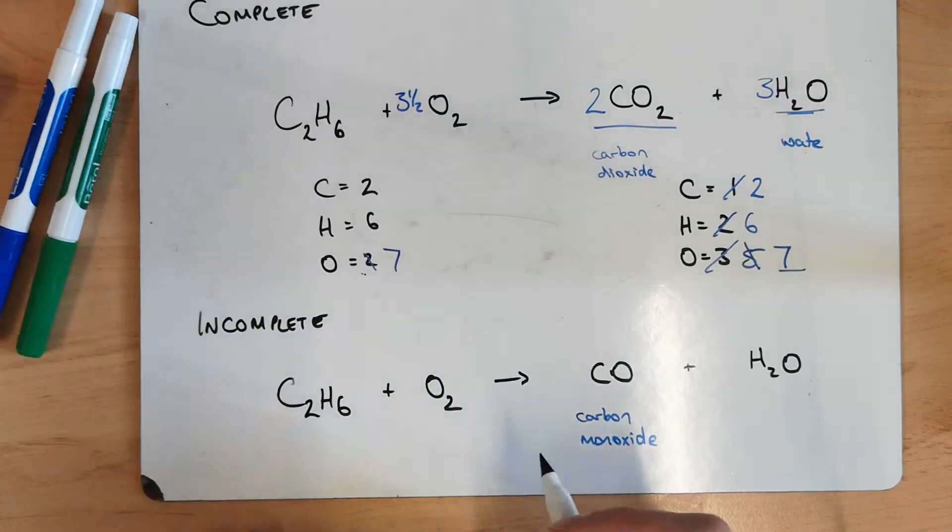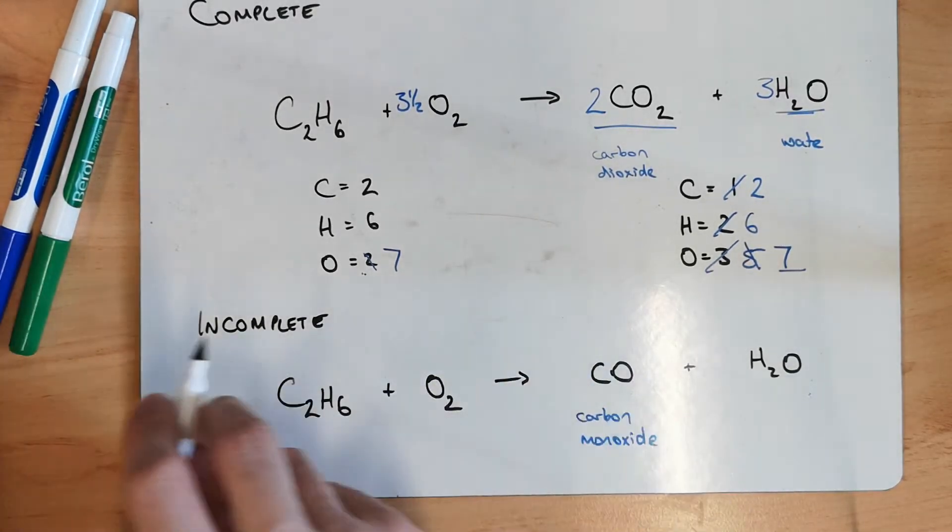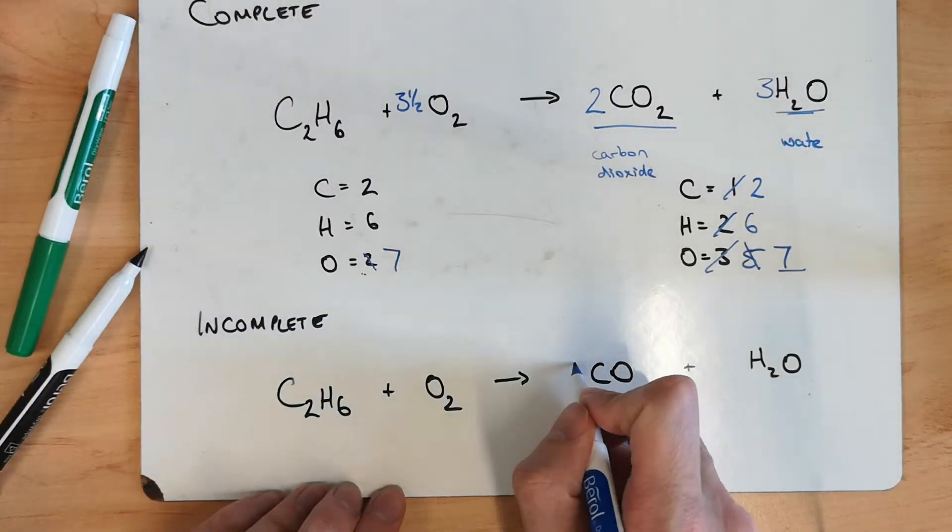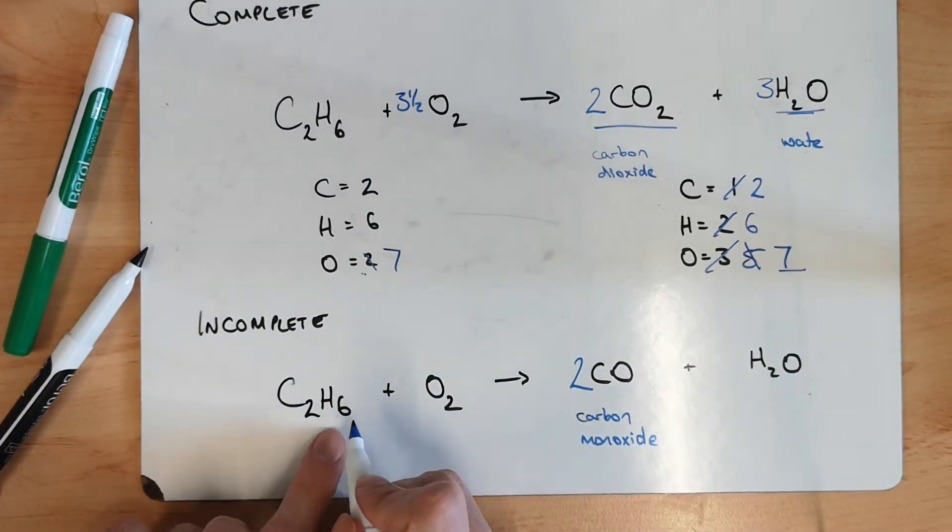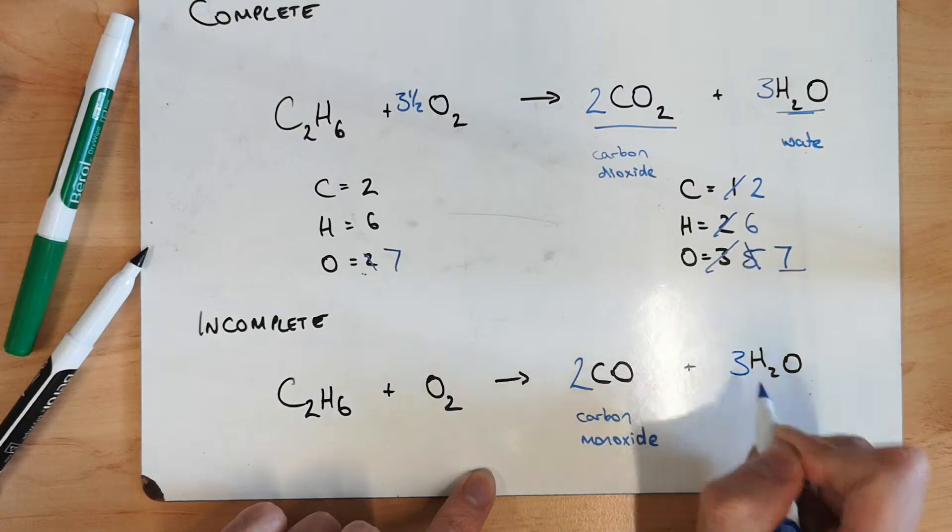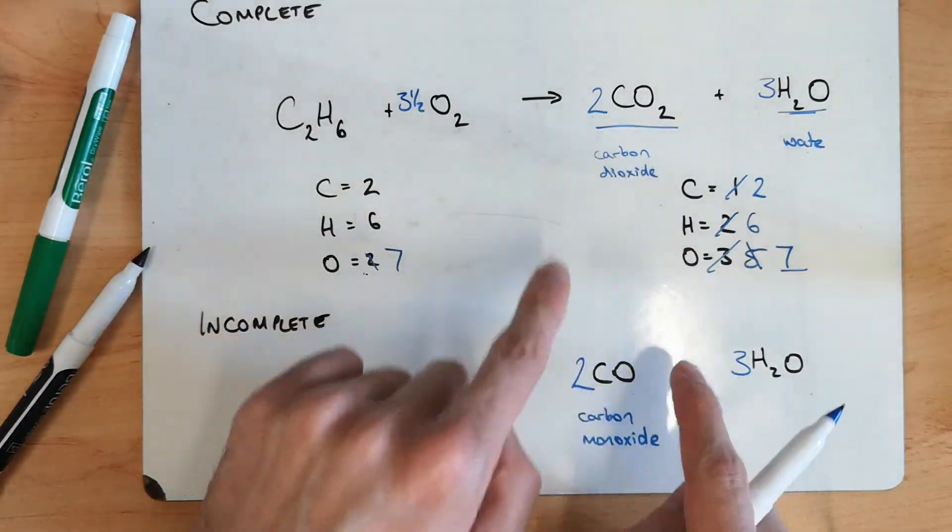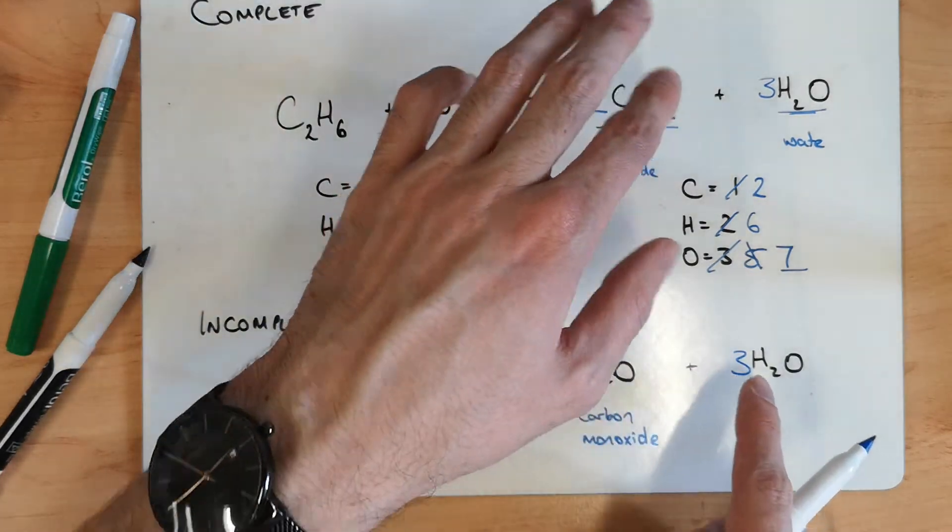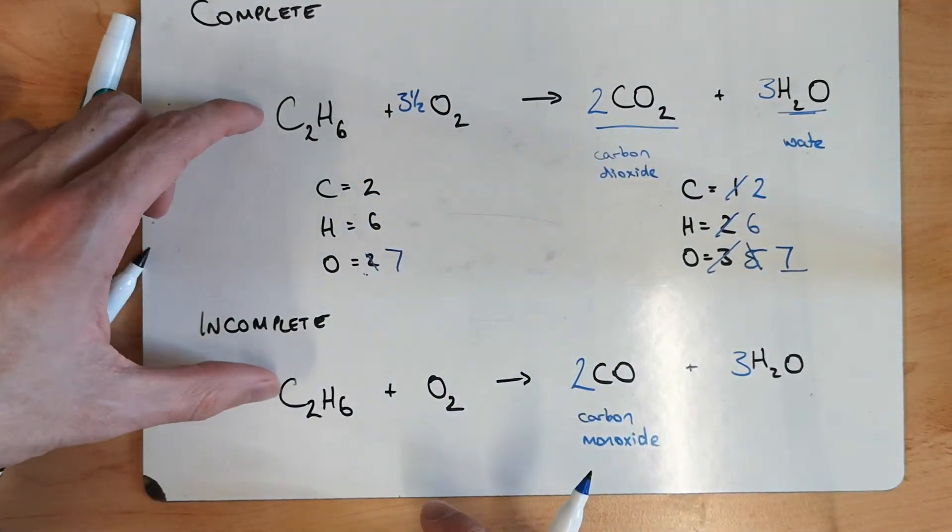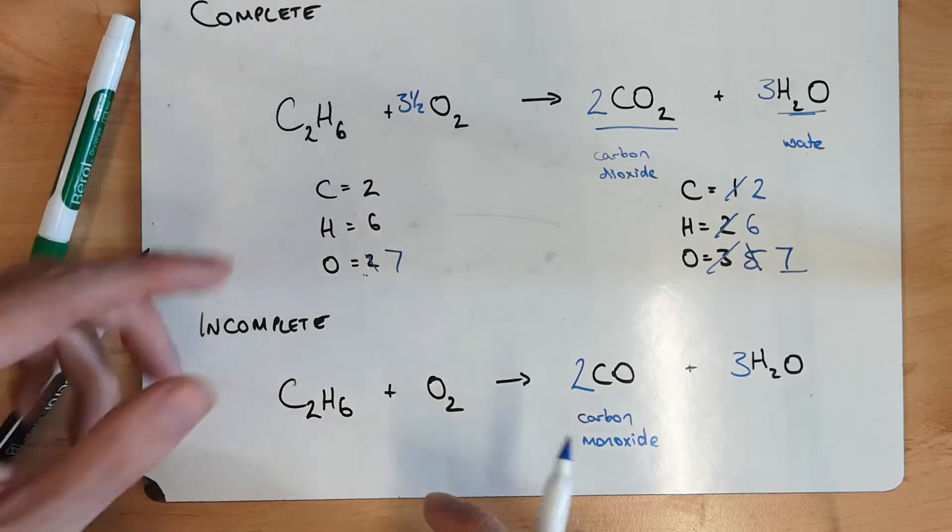So. With this. Two carbons. We need to get this to two. So I'm going to put two there. Six hydrogens. So again. I'm going to put a three there. So this mirrors what we see up here. Because the CO's and the waters. Or the CO2's and the waters. They depend on what hydrocarbon we've got.